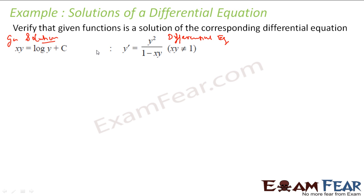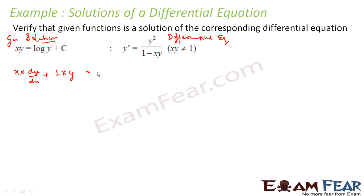To prove this, same as before, I have to find the value of y dash. I have y already given, so I need to find dy/dx and make sure LHS and RHS are the same. To find y dash, let us differentiate with respect to x. This is x·y, so: x constant × dy/dx + differentiate x (that becomes 1) × y = log y becomes (1/y) × dy/dx.